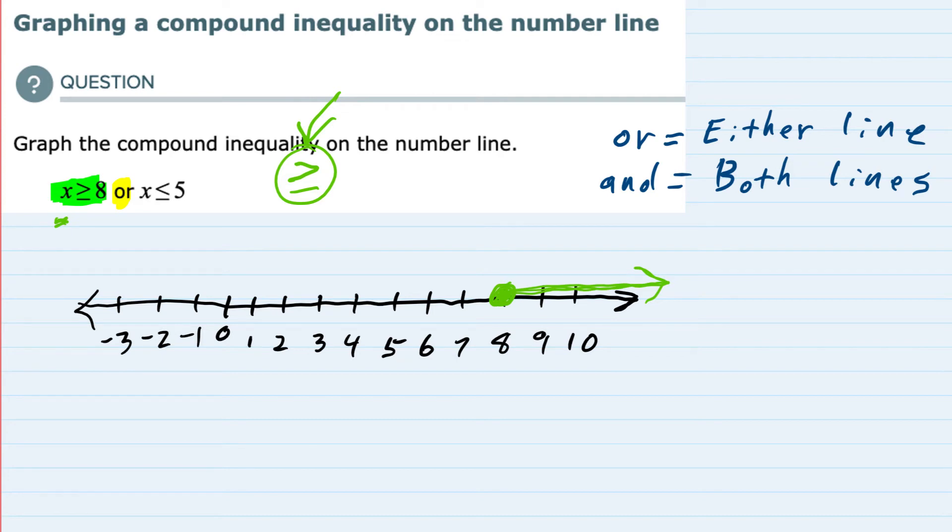Now I'll switch to the second part of this compound inequality: x ≤ 5. I'll put my circle at 5. Since it has the line underneath allowing 'equal to', I'm going to close in that circle. Then 'less than 5' is everything to the left, so I'll draw my arrow going left. Again, since x is on the left-hand side, the sign is pointing in the right direction—it points to the left, and we drew our arrow to the left for less than or equal to 5.